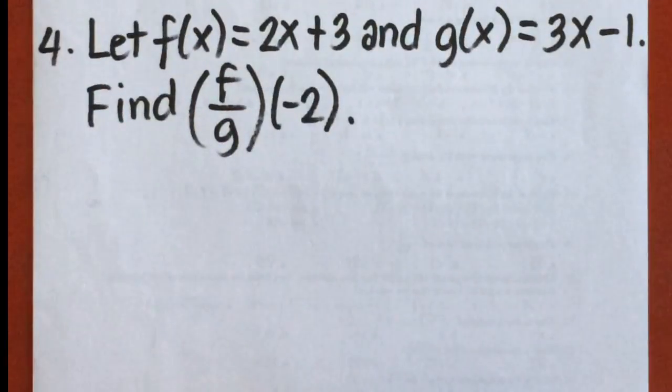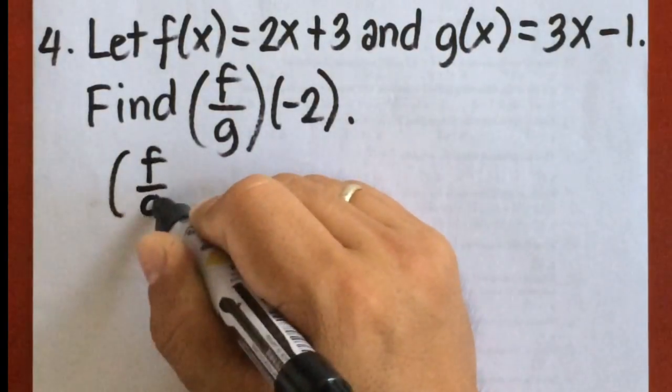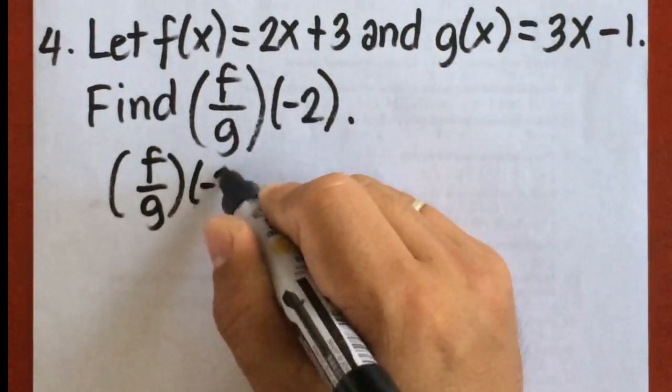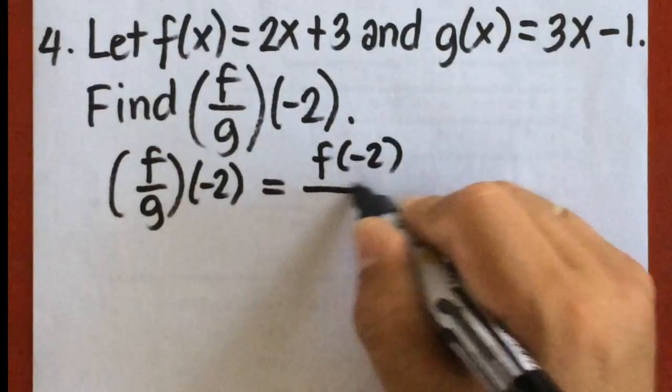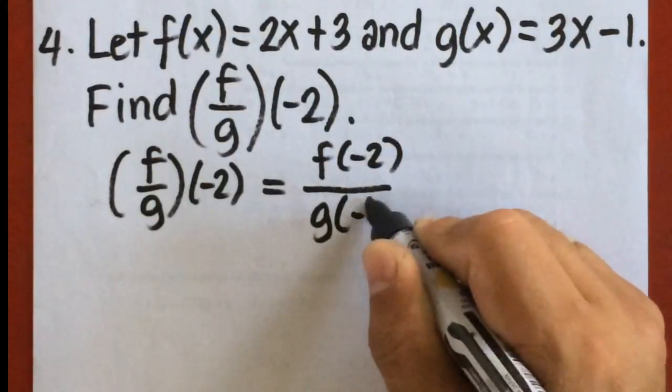Example number four, let f of x equals 2x plus 3 and g of x equals 3x minus 1. So we're going to find f over g of negative 2. So f over g of negative 2 will be equal to f of negative 2 over g of negative 2.